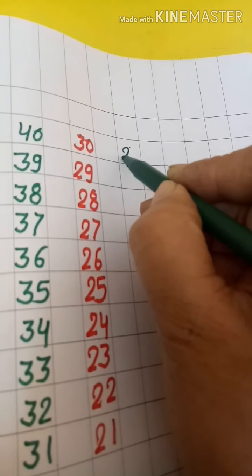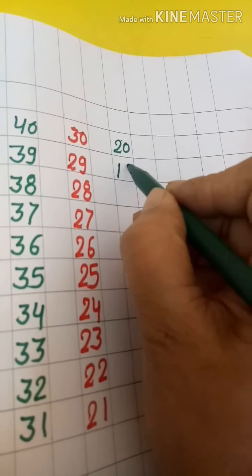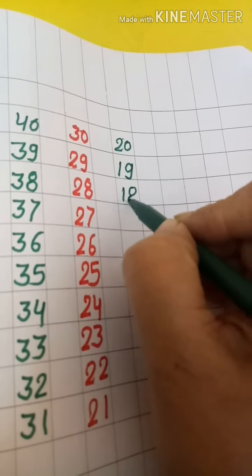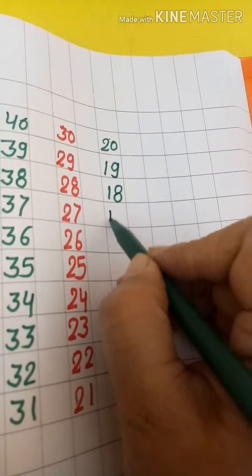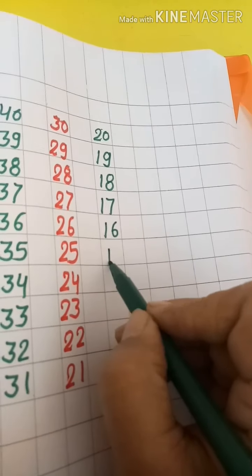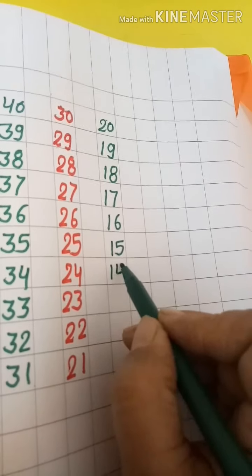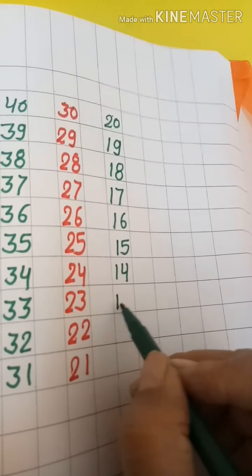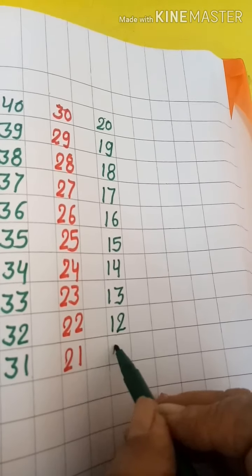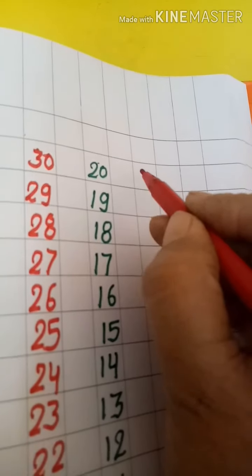20. 20 के पहले क्या आता है? 19 की लाइन आती है. 19, 18, 17, 16, 15, 14, 13, 12, 11.